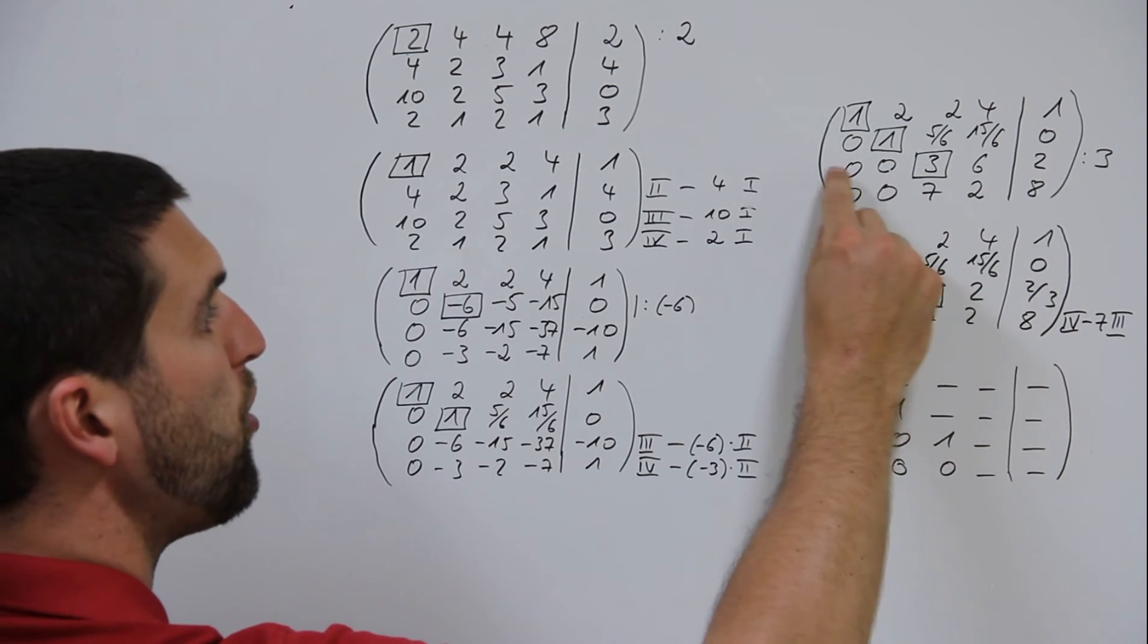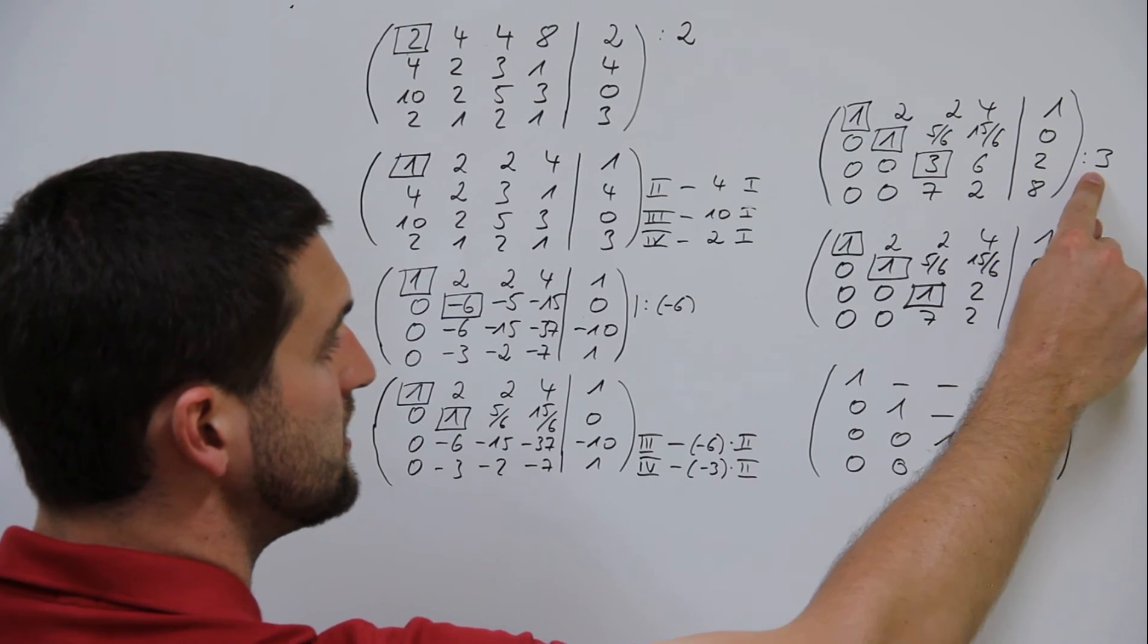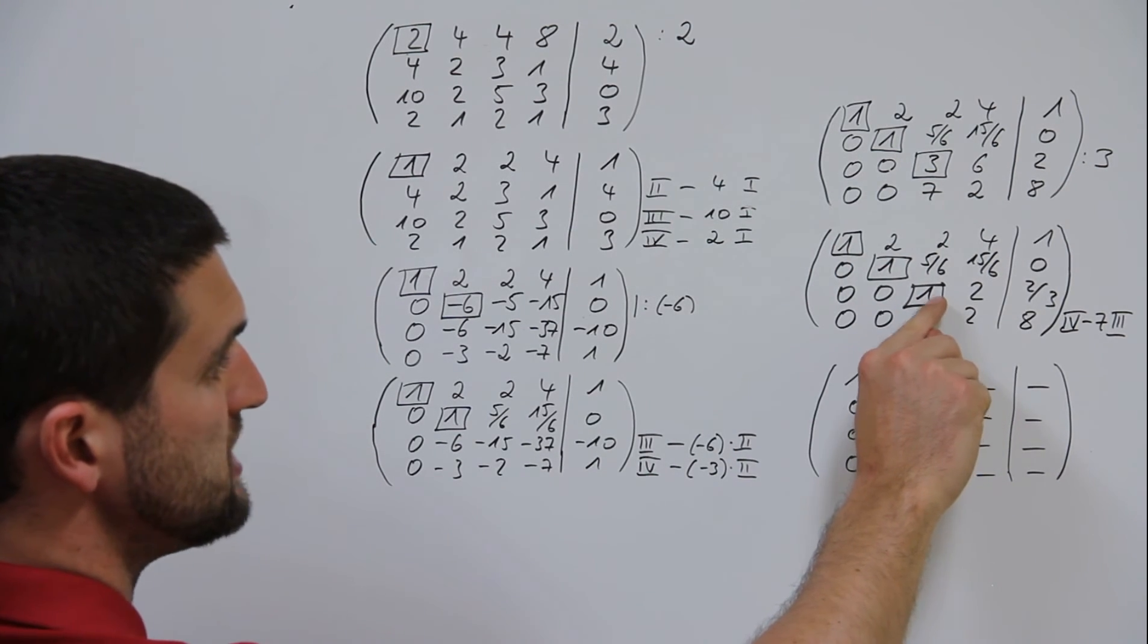Divide the whole line 3 through the pivot element. Again pivot element the new is 1.